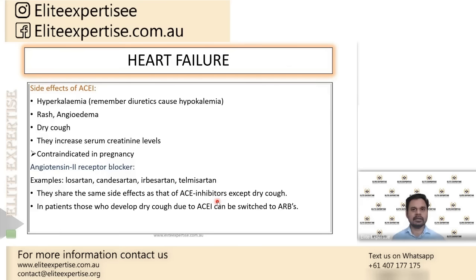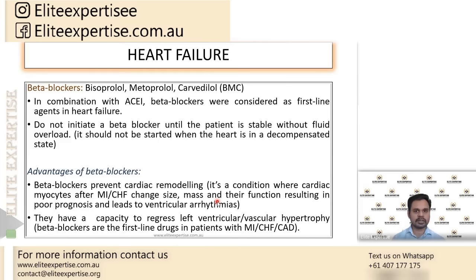The next class of drugs are the beta blockers. Examples are bisoprolol, metoprolol, and carvedilol. Only these three — bisoprolol, metoprolol, and carvedilol — can be used in heart failure. For metoprolol, only the sustained-release form is the drug of choice in heart failure. Beta blockers are always used in combination with ACE inhibitors in the management of heart failure. This combination — ACE inhibitor plus beta blocker — is considered the first-line regimen in heart failure.